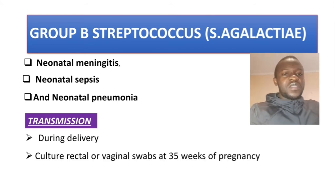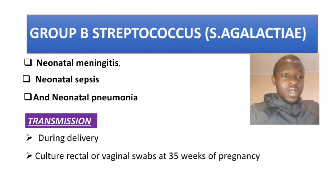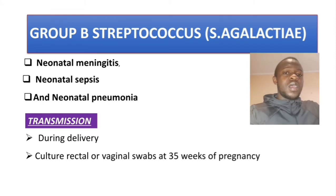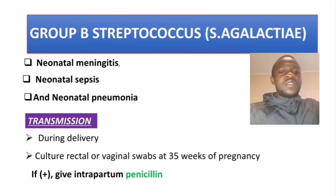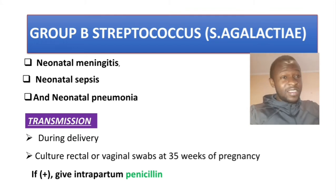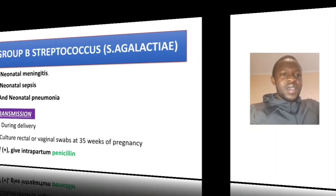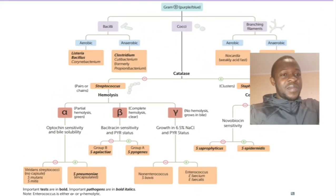At 35 weeks of pregnancy, we should culture rectal or vaginal swabs to see if the patient is carrying Group B Streptococcus, because about 25% of pregnant women carry this bug. If it is present, then we should give intrapartum penicillin.